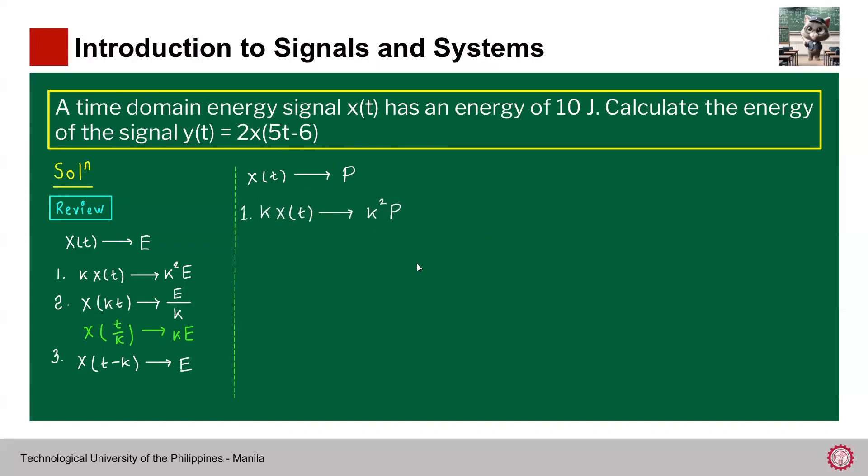Second result: if we perform time scaling, let's say x(kt), what will be its corresponding power? Power is still P. Remember that time scaling doesn't affect the power. Number three, we have shifting x(t - k). Again, the shifting operation doesn't affect the power. So it's still P. So only the amplitude scaling affects the power of a signal.